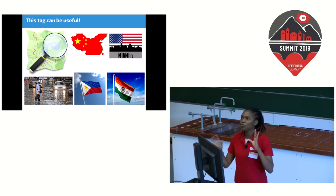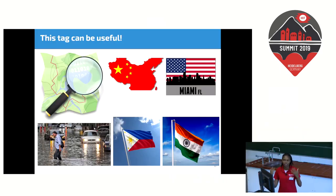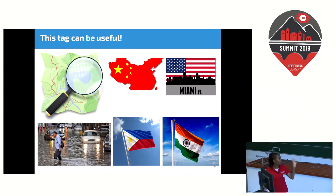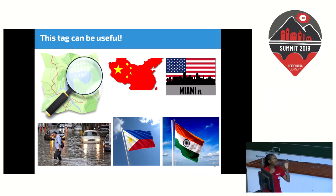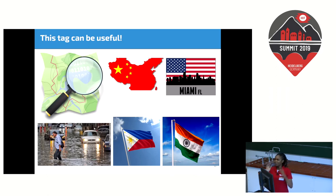I want us to leave here with the notion that this tag and this project can be useful in flood-affected areas all around the world — for example, Guangzhou in China, Miami, the Bahamas, Philippines, India, Mozambique, and many others. At least 17 million people are displaced every year by floods. This is one project that can be used by other communities around the world. Thank you.